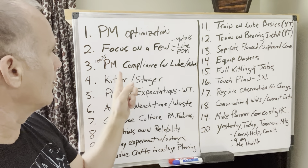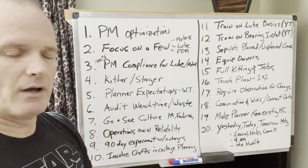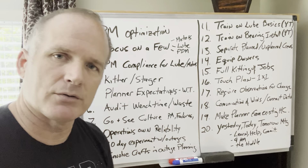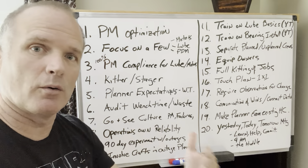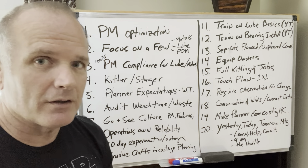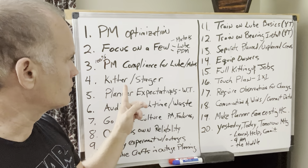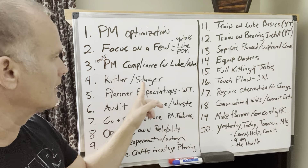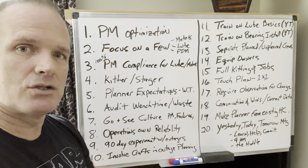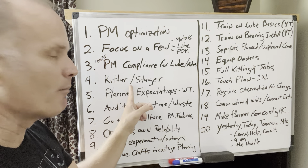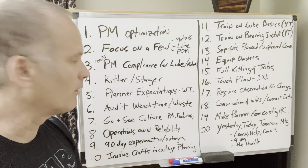Number three: try for 100% PM compliance. If you're only 50% compliant on your PMs, make sure that you're 100% on lube, or whatever is your issue year after year, decade after decade. Number four: make one of your craftspersons — a very knowledgeable, experienced one — a kitter or stager. They put together the parts for the job, help you plan it and stage it at the workgroup. This can dramatically increase your wrench time and efficiency, freeing up people to work on planned work.